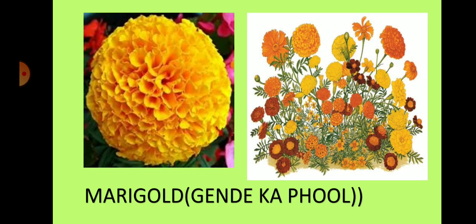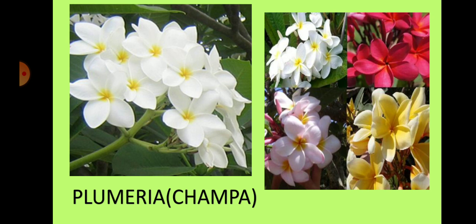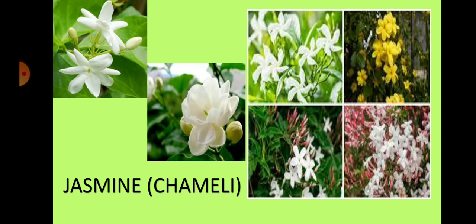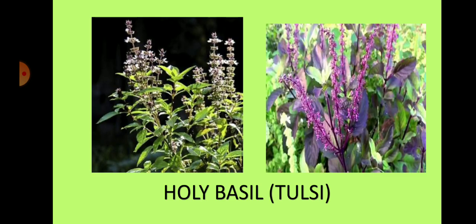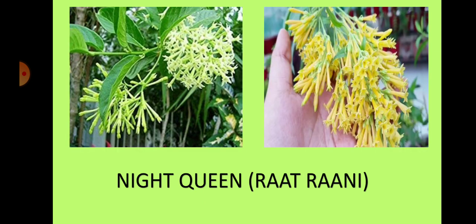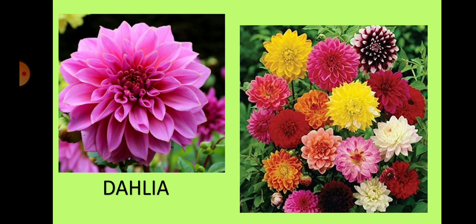This is a picture of marigold. It is known as gende kaful in Hindi. Marigold also has different types. This is plumeria, or champa. Look here — the picture of chameli, or jasmine. These are the flowers of holy basil, or tulsi. Holy basil also has different varieties. This is night queen, or ratrani. This is dahlia. Dahlia also comes in different colors and shapes.